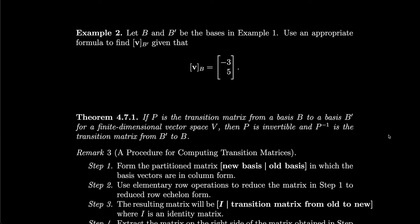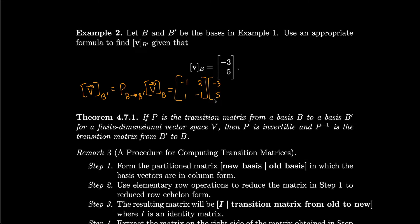Now, using B and B prime from example 1, let's use an appropriate formula to find V sub B prime given that V sub B equals minus 3, 5. We write V sub B prime as the transition matrix P from B to B prime multiplied by V sub B. We already computed that transition matrix as minus 1, 1, 2, minus 1. Multiplying by minus 3, 5 gives 13, minus 8. So that is the vector expressed in terms of the new basis B prime.